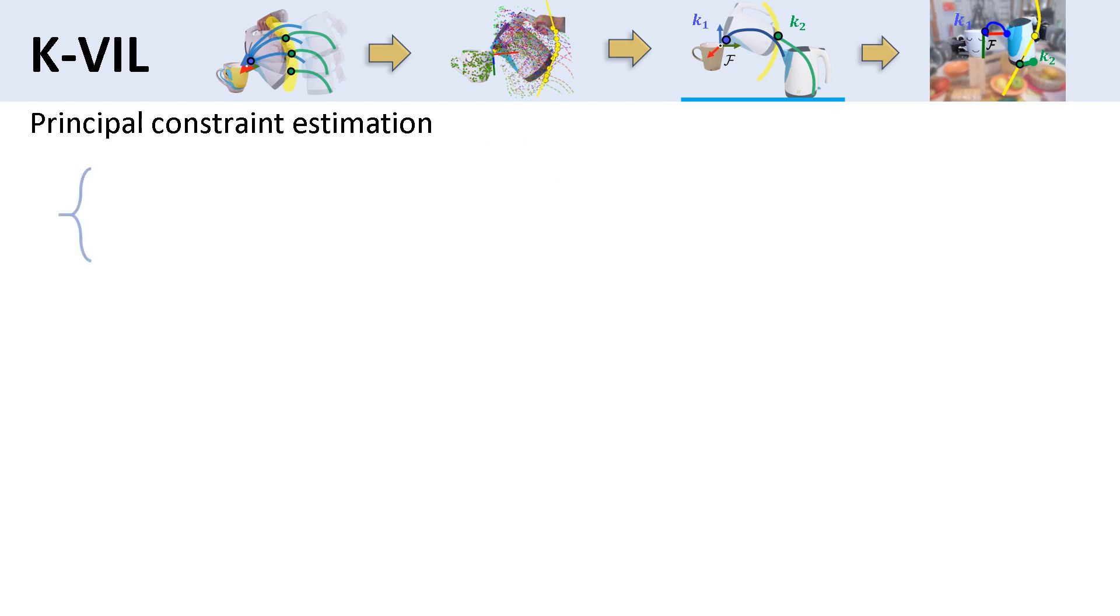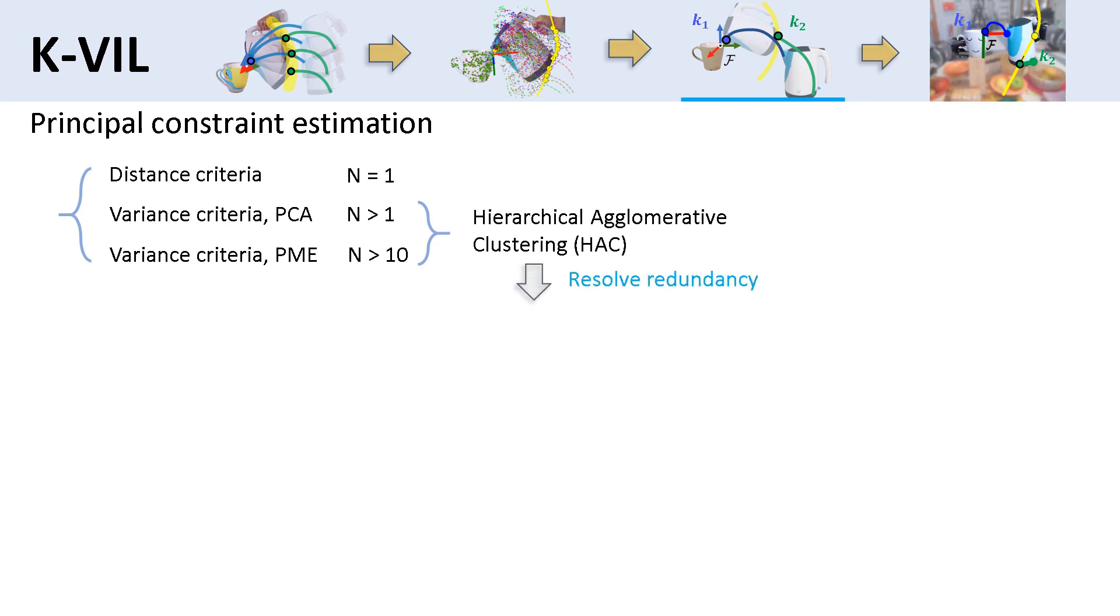Depending on the number of demonstrations, we propose distance and variance-based criteria in the PCE framework. This allows KIVOS to learn tasks from a single demonstration and update the learned tasks when more demonstrations are available. Finally, we apply hierarchical agglomerative clustering to further remove redundancy in KIVOS task representation.